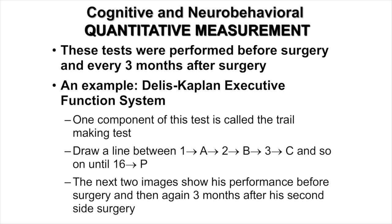One example shown is the Delis-Kaplan Executive Function System's Trail Making Test. The subject is asked to draw a line connecting 1 to A, A to 2, 2 to B, B to 3, 3 to C, and so on through 16 to P. The next two images show his performance before surgery and again three months after his second side surgery.